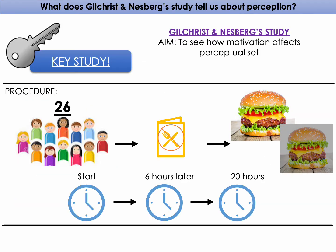Their aim was to see how motivation affected Perceptual Set. They used 26 students in an independent groups design, where some were starved for 20 hours and some ate as normal for the duration of the experiment. All participants looked at pictures of food for 15 seconds, then the screen went blank. They were told the pictures would look different when shown again, and were asked to adjust the brightness of the images back to the original. This was done at the start of the study, six hours later, and at 20 hours later.